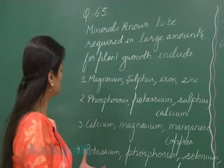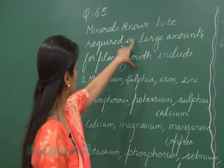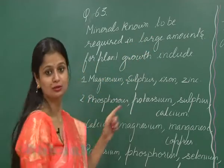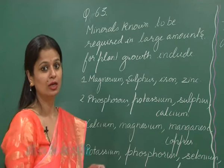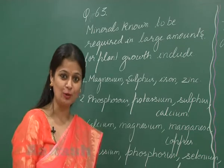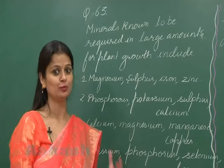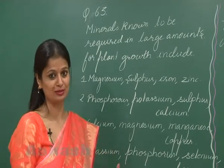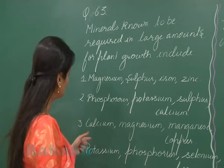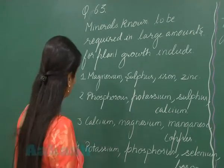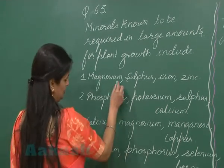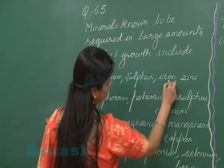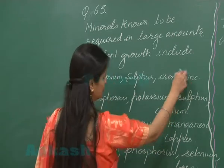Question number 63: minerals known to be required in large amount for plant growth. When we talk about large amounts, we are talking about macronutrients. Magnesium and sulfur are macro, while iron and zinc are micro.